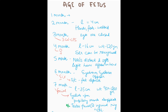At one month there is no specific change. From two months up to five months, the length of the fetus is the square of the month number. So at two months the length is four centimeters, and at two months hands and feet are webbed. To remember: hands are two, feet are two — so two months, hands and feet are webbed.